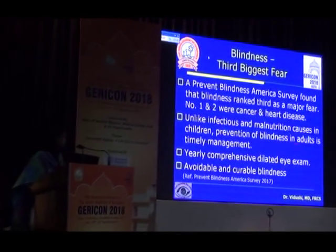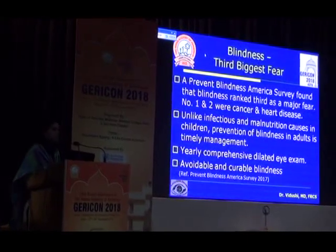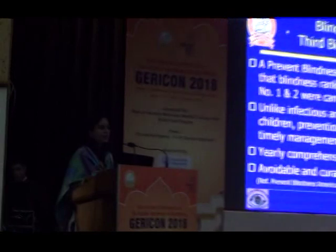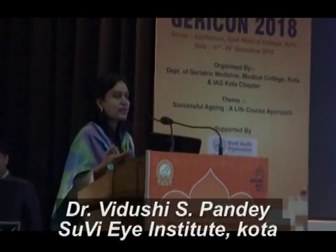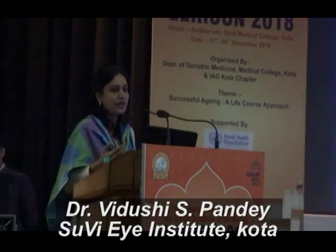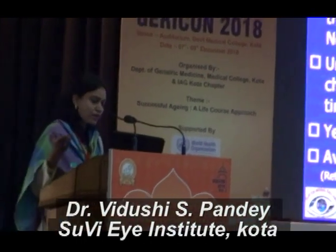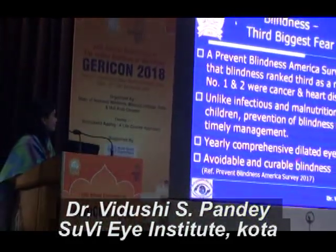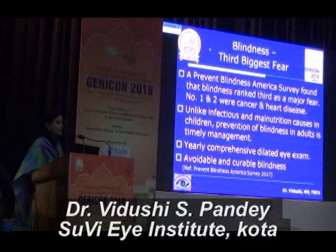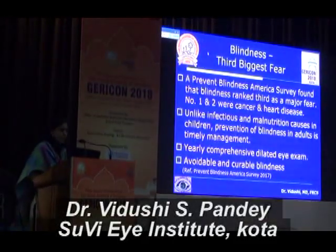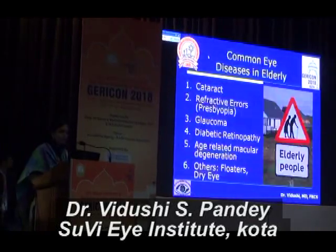Unlike infection and malnutrition causes seen in children which are preventable, prevention of blindness in the elderly basically means timely management of diseases. We may want to prevent the diseases — like someone asking how to prevent heart disease — but all we can do is manage them in a timely manner. It is like elections: you may want the best candidate but you have to choose from what you have. So here also we have only timely management; we cannot prevent the diseases altogether. It may not be preventable, but it is avoidable and curable.